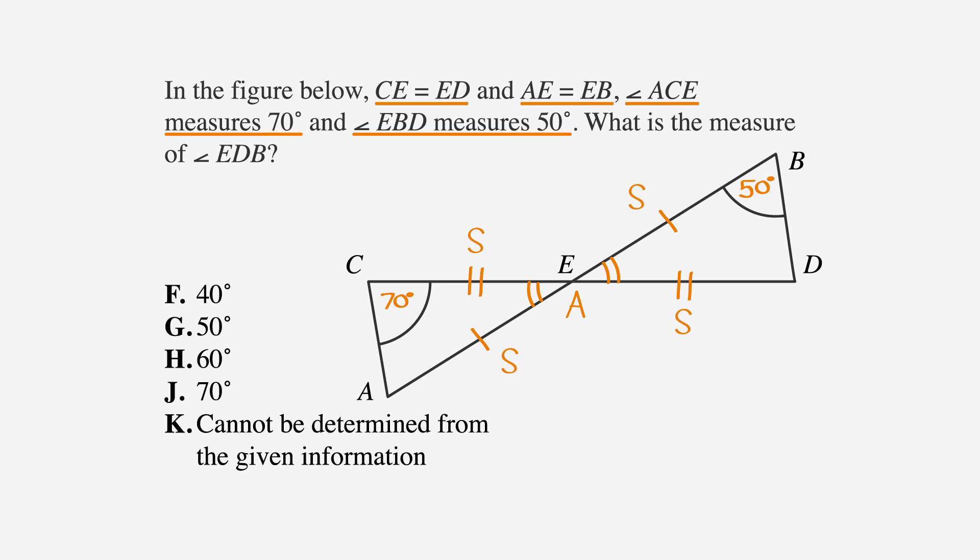Now we can see a side angle side congruence. If you continue around the triangle in the direction of congruence, angle C must equal angle D, which means that angle D measures 70 degrees. Choice J is the correct answer. Now all you have to do is reward yourself with a treat.